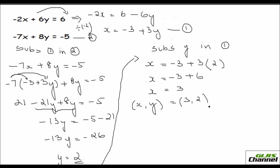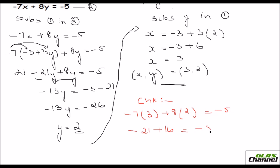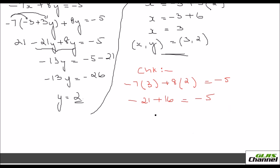Let's verify the answer using equation 2. Replace x and y with 3 and 2: minus 7 times 3 plus 8 times 2 equals minus 5. That is minus 21 plus 16 equals minus 5. LHS equals RHS, so the answer is correct.